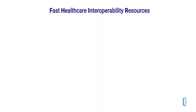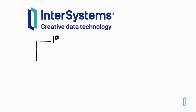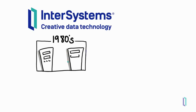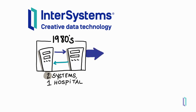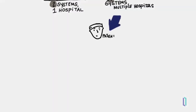FHIR, or Fast Healthcare Interoperability Resources, is a healthcare data standard created by HL7 International to meet the interoperability needs of the current healthcare data environment. Over the past few decades, more and more systems need to be connected, so a data standard of this kind has become essential. In fact, compatibility with the FHIR standard is now federally mandated for healthcare IT systems in many countries.